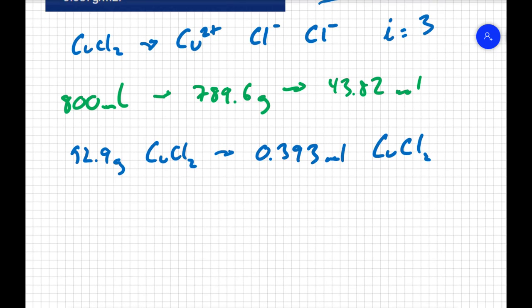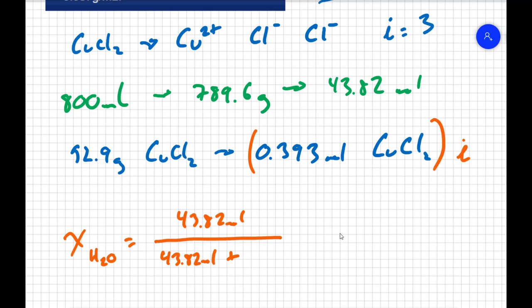So if we're to find the mole fraction of the solvent, the mole fraction of the water is going to equal my moles of water, which is 43.82 moles, divided by my total number of moles, which is 43.82 moles of water, plus copper(II) chloride breaks apart into the Cu and the two chlorides. So to find my total moles of solute, I have to find the number of moles of particles. So I'm going to take my moles of the copper(II) chloride and multiply it by the Van't Hoff factor. I'm going to take 0.393 and multiply it by 3, and that will tell me the true mole fraction of the water.